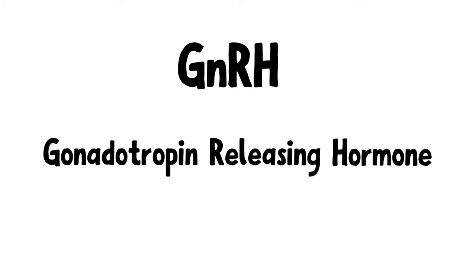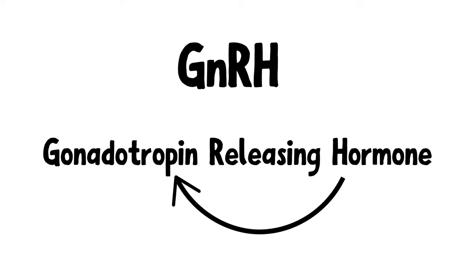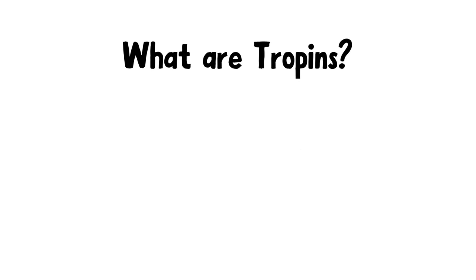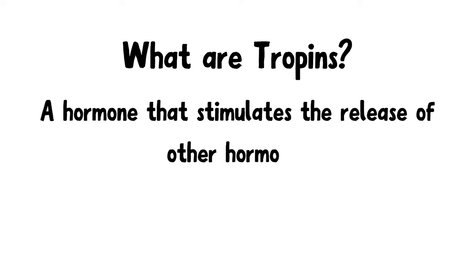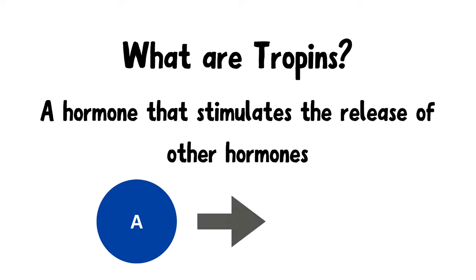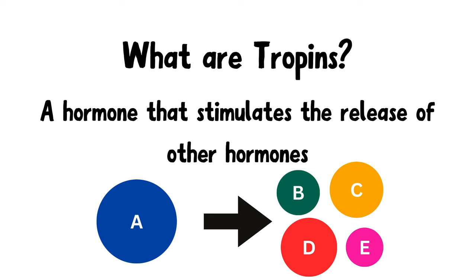GnRH, or gonadotropin-releasing hormone, is a hormone that releases gonadotropins. Before moving on to gonadotropins, let's talk about tropins. A tropin is a hormone that stimulates the release of other hormones — if tropin is A, it can stimulate the release of other hormones like B, C, D, E, etc. With that in mind, let's move on to gonadotropin.